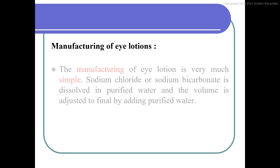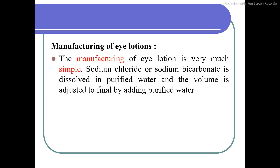Manufacturing of eye lotion is very simple. You just have to take the required amount of solute dissolved in purified water, and the volume is adjusted to the final volume by adding purified water. For example, if you want to prepare 100 ml of eye lotion, instead of taking the full quantity of water at once, you can take 60 to 70 ml of water, dissolve your NaCl or sodium bicarbonate, and make up the volume to 100 ml. That's it — your eye lotion is ready.